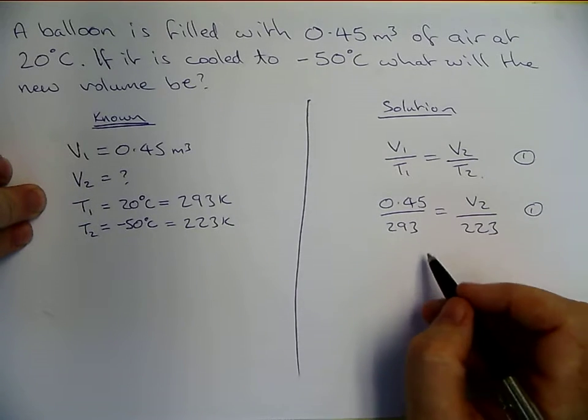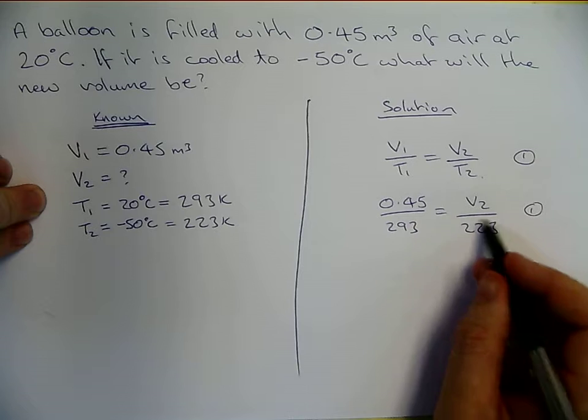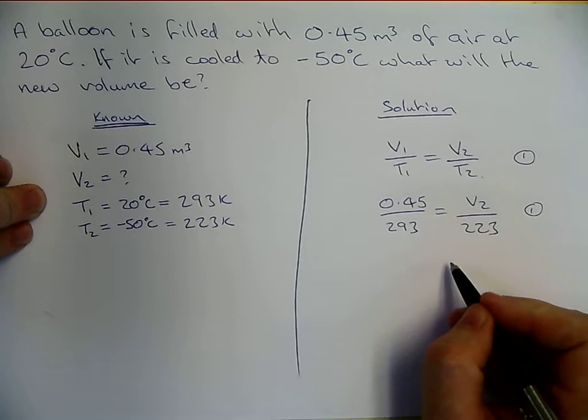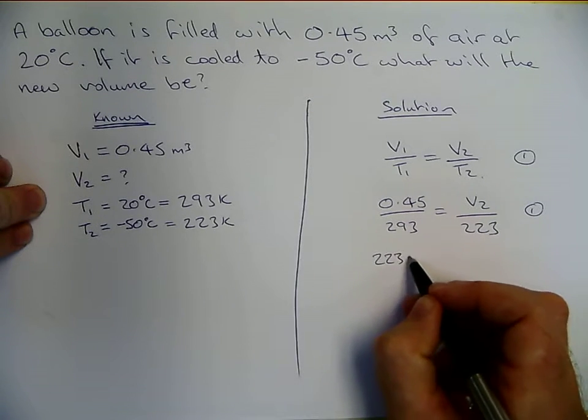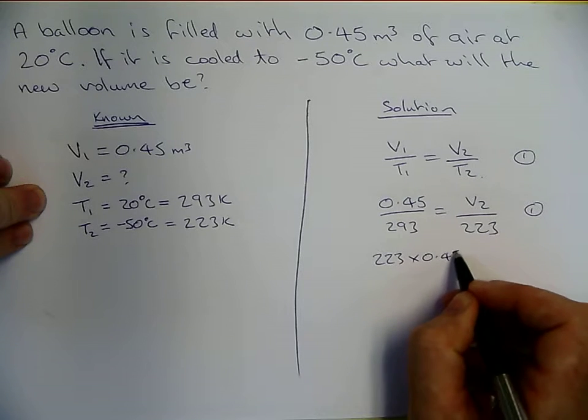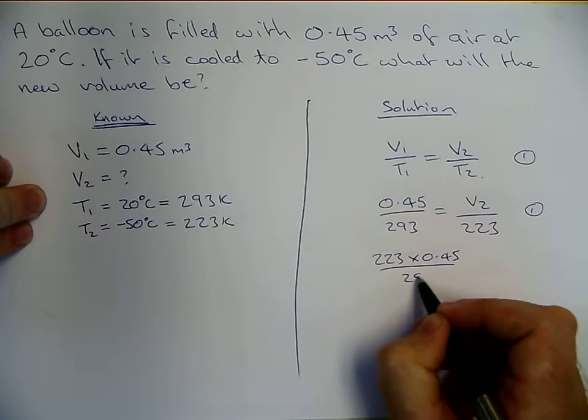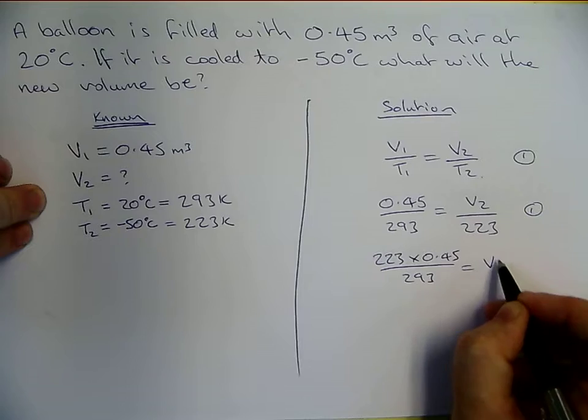Now we need to get V2, so we're going to have to get rid of this. And to do that we multiply by 223. So 223 times 0.45 divided by 293. That equals V2.